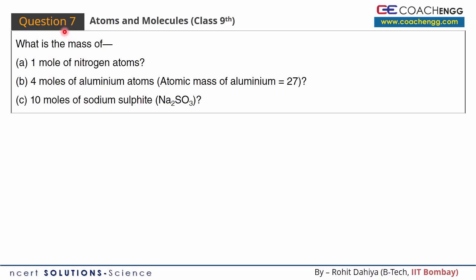Hello friends, I will now discuss question number 7 of the NCRT exercise from the topic atoms and molecules. What is the mass of? We have to get the mass in three different parts. In the first part, we have to solve the mass of one mole of nitrogen atoms.